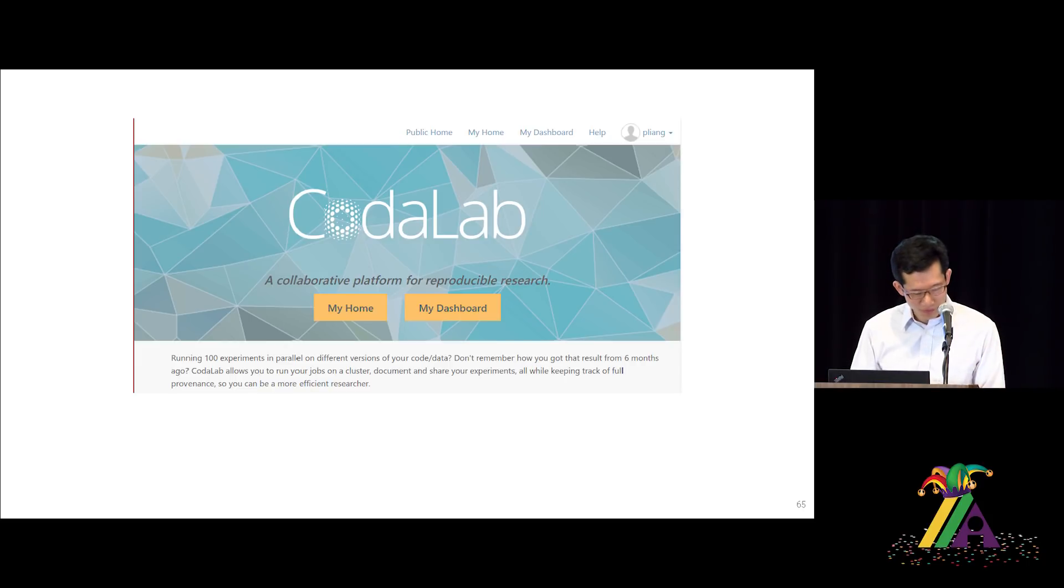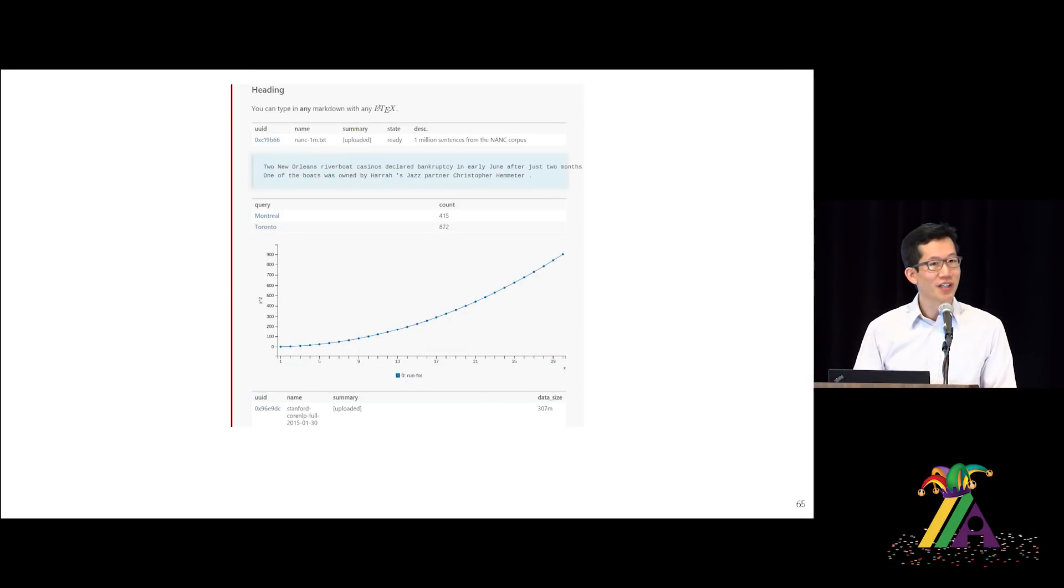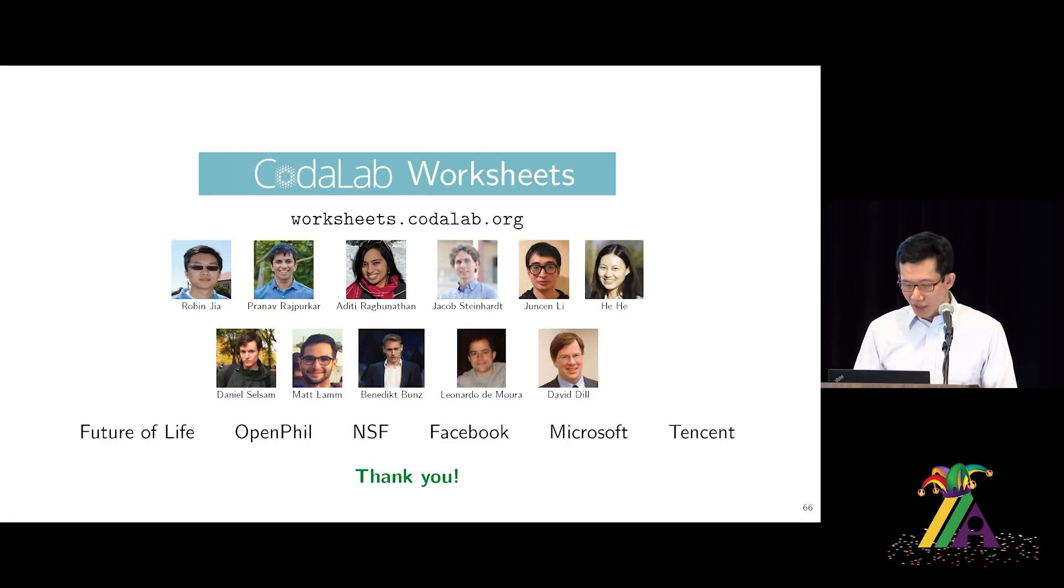So all of our code and data and experiments are available on our platform Codalab. Codalab is this platform that allows you to upload code, data, and actually run experiments, which are arbitrary Linux command that runs in a Docker container so that it keeps the provenance of every experiment that you did so you can have guarantees of reproducibility. It has this Jupyter-like notebook interface that allows you to visualize your results as well. Okay, so with that, thanks for your attention.